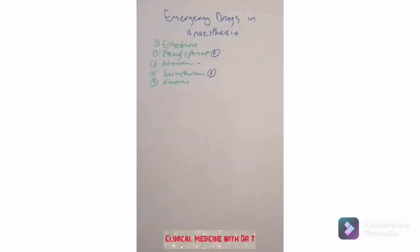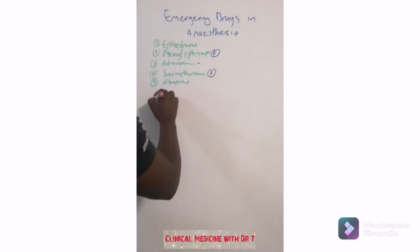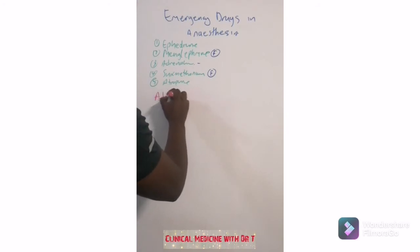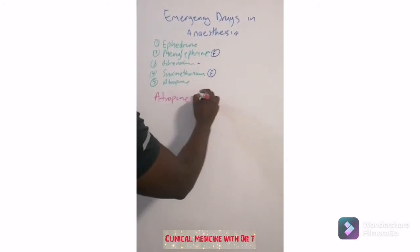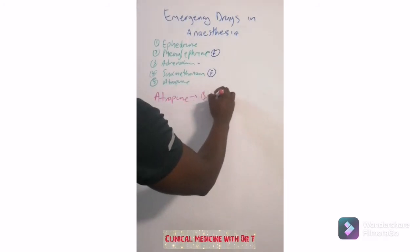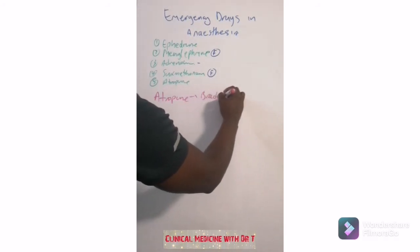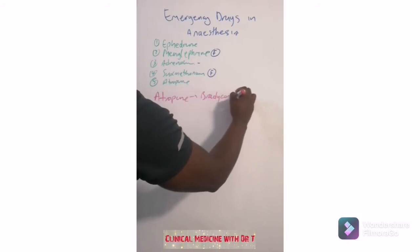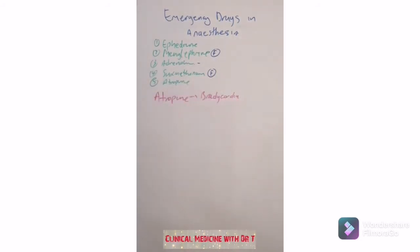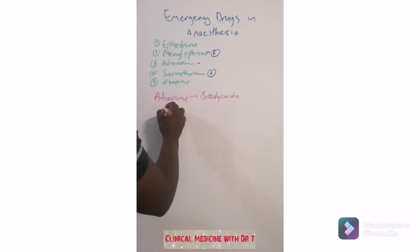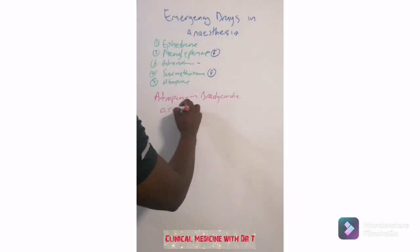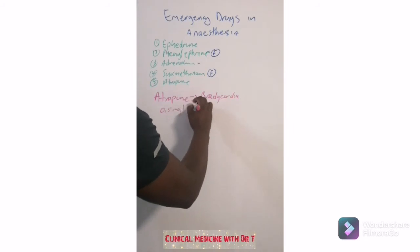Atropine is the next drug. Atropine is used to manage bradycardia. It comes in a vial that is 0.5 milligrams per mL.